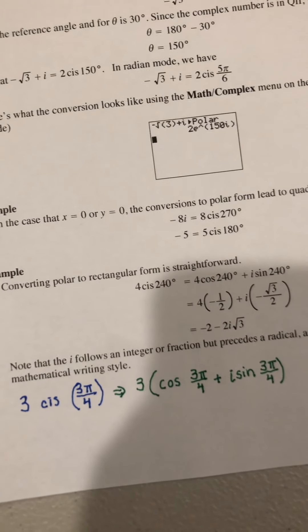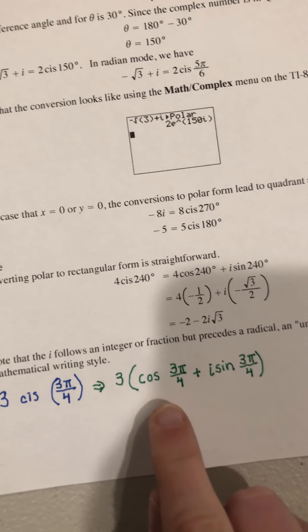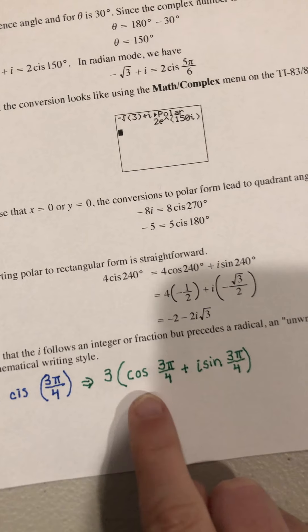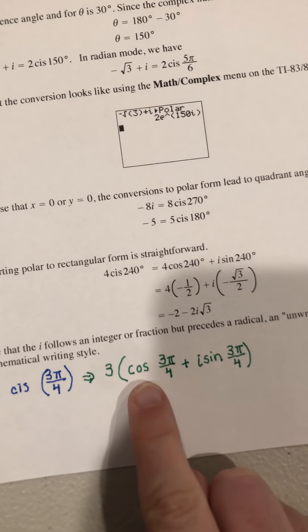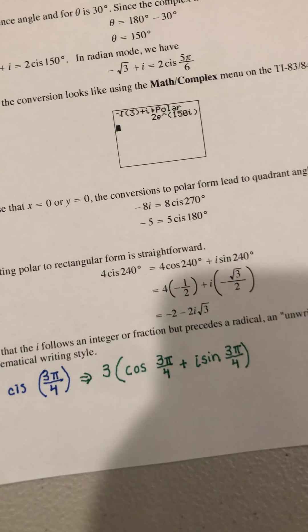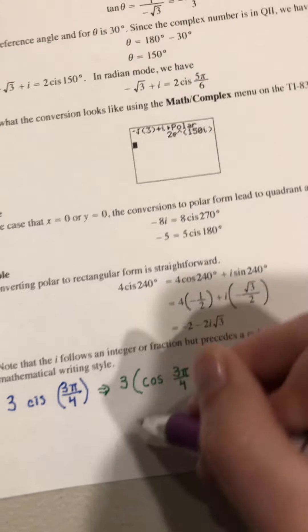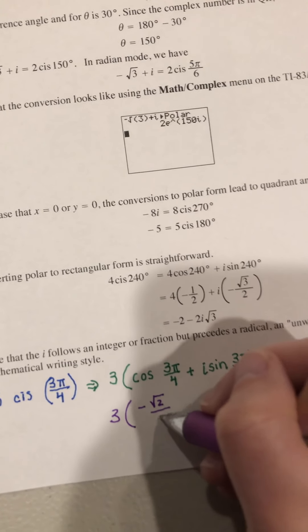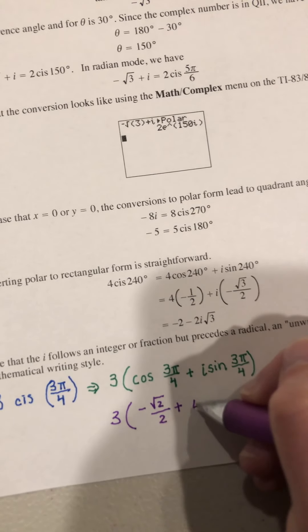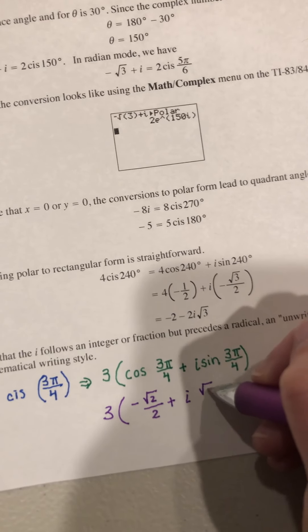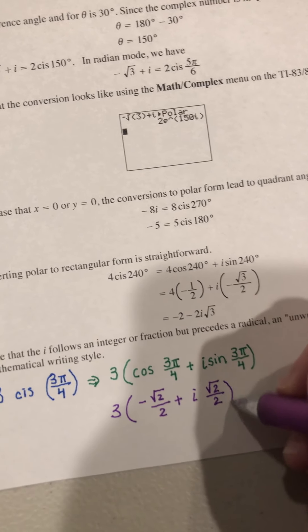And you pretty much just take your cosine here, find cosine 3 pi over 4 plus i sine 3 pi over 4 is positive square root 2 over 2.